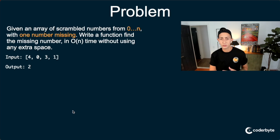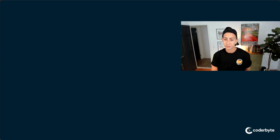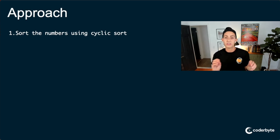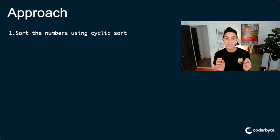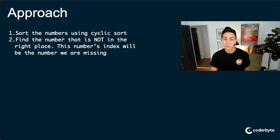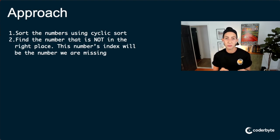So what's our approach? How can we use cyclic sort to figure this out? For this one, we want to sort the numbers using cyclic sort. What that will do is put all the numbers that we do have in the proper place, except for one remaining number, which will take the place of the missing number. So after we sort the numbers, we'll be able to find the one number that is not in the right place. And where that number is in the array — its index — that will be our missing number.